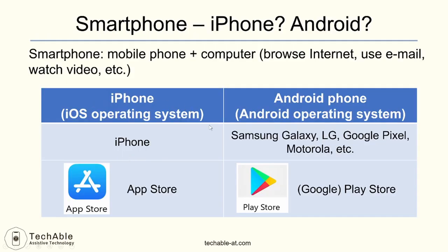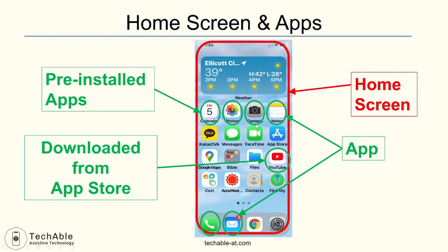The name of the store for iPhone apps is called the App Store. And for Android phones, the store is called the Play Store or Google Play Store. From these stores, you can download any app you want to use on your phone. The App Store app or Play Store app is always included and shown on the phone when you buy it.